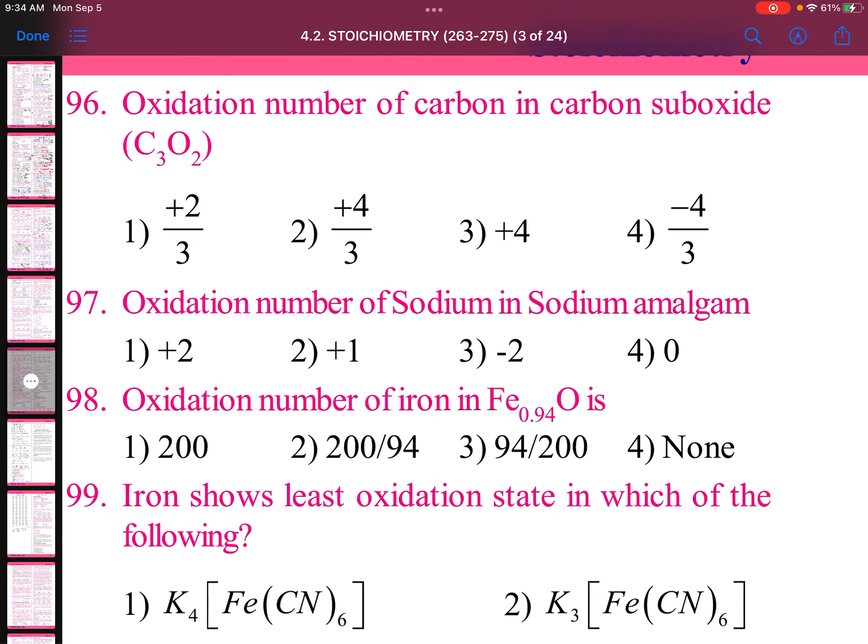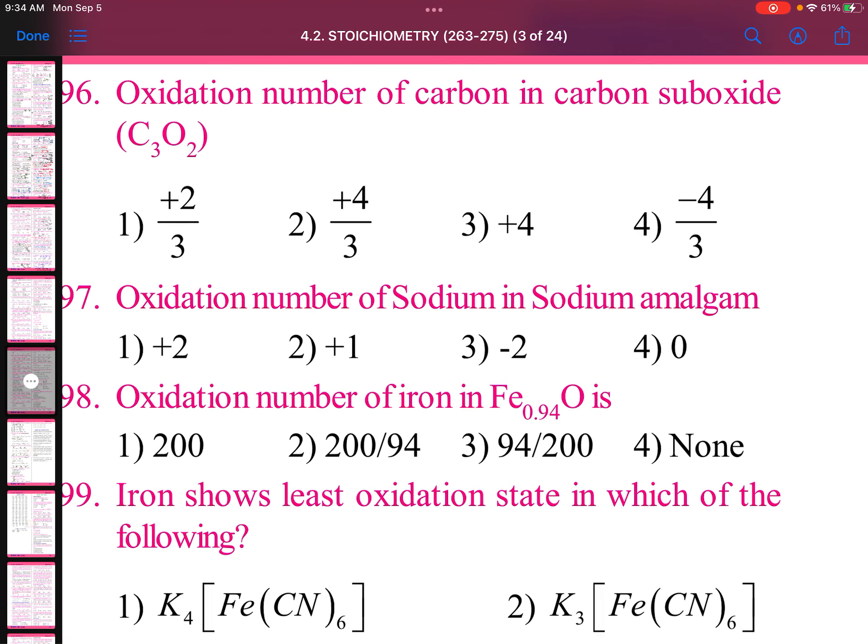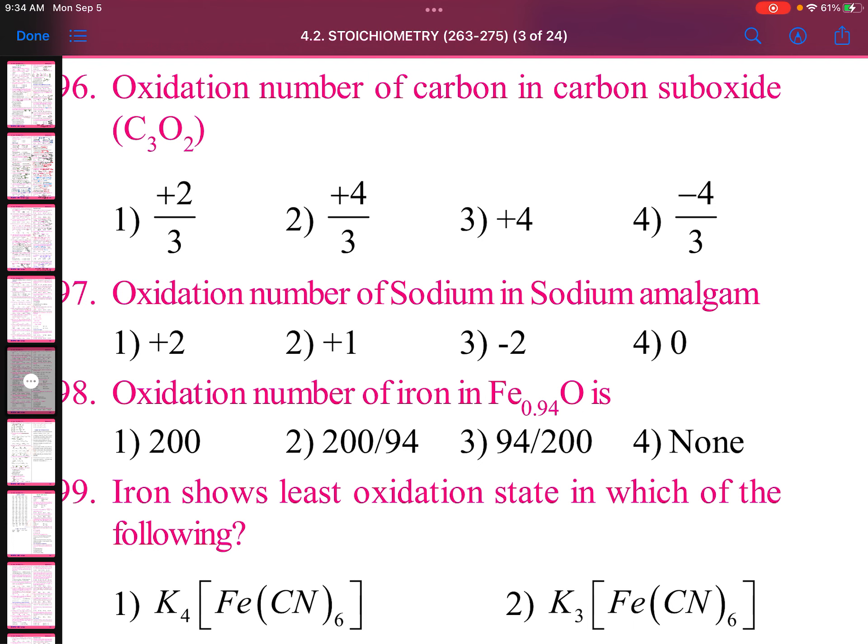Oxidation numbers assignment. Oxidation number of carbon in carbon suboxide. Carbon suboxide formula is given. 3x minus 4 equals 0, so 3x equals plus 4, or x equals plus 4 by 3.